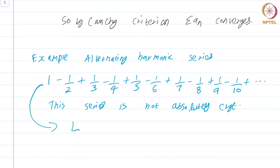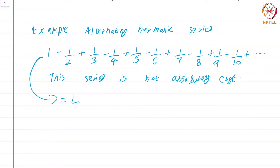Let us for the time being assume that this series converges to some L. I am not going to compute L now, nor show that this series converges at all right now. We will see that in a more general theorem — the alternating series test — because proving this converges is the same as proving a much more general fact. So let us just assume for the time being that this converges to L, and explore whether we can manipulate infinite series with the same freedom as finite series.